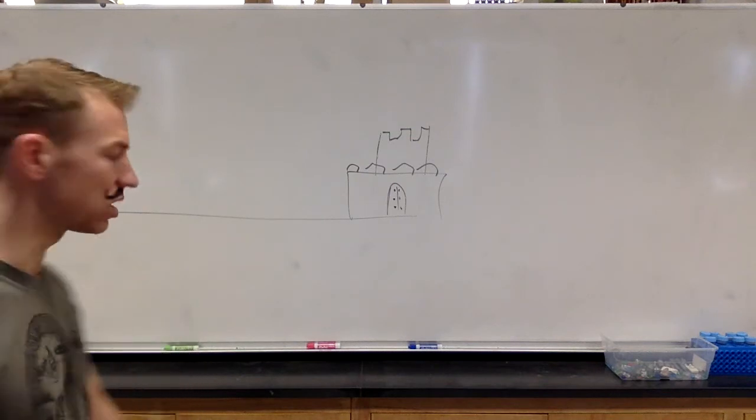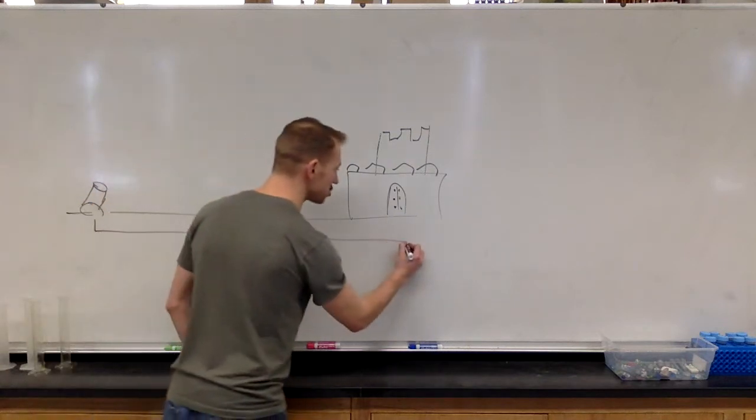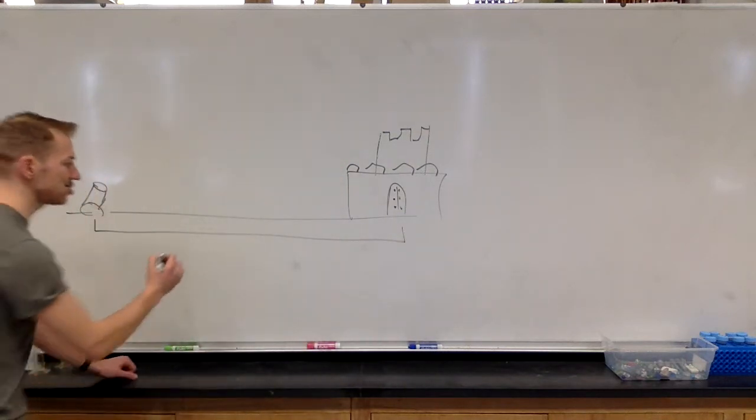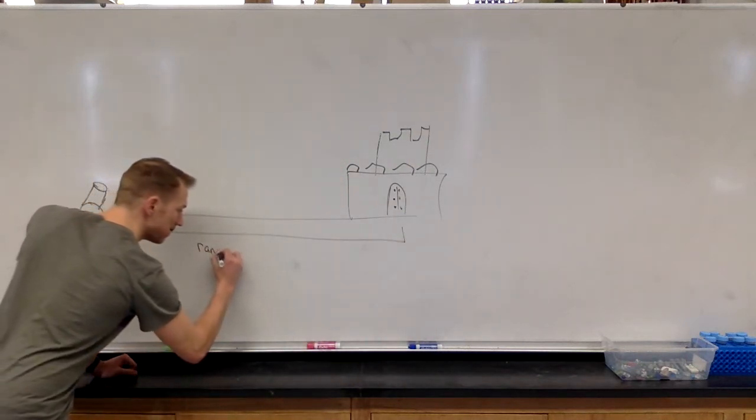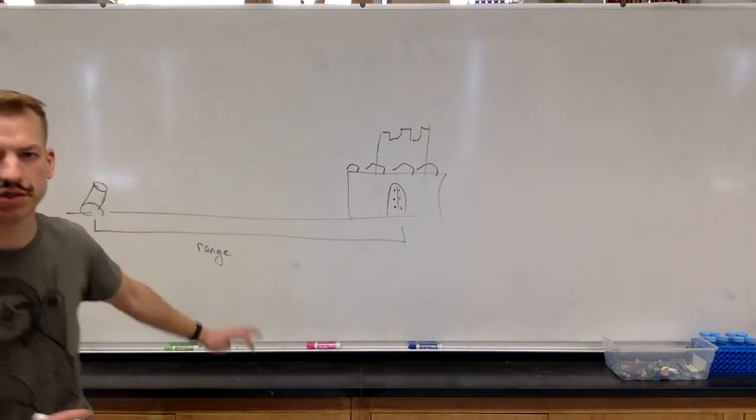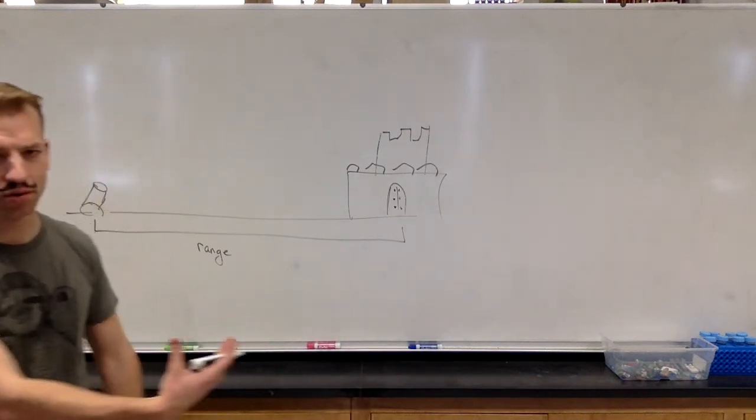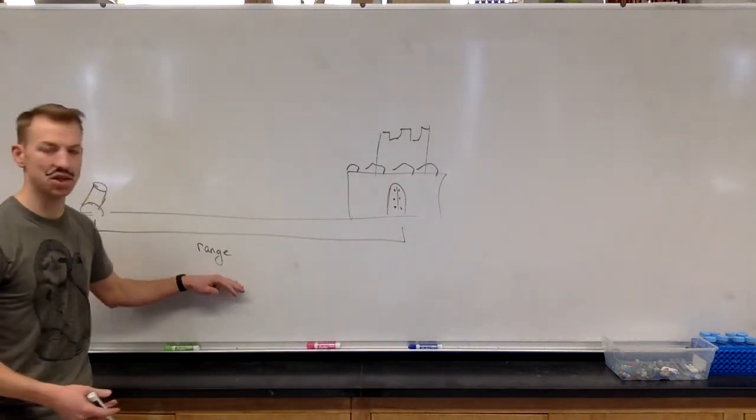So there are a couple of things that we need to talk about. The distance that a projectile launched is actually called the range of that projectile. So the change in x for projectiles that are launched upwards, or even projectiles that are launched horizontally, we call that distance the range.